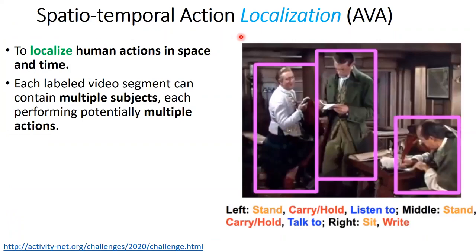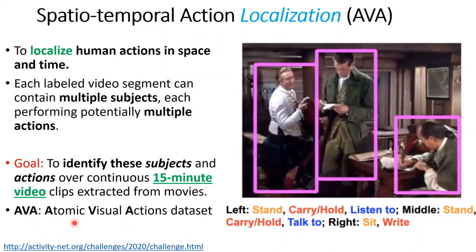AHAR — Atomic Visual Action dataset — is a spatiotemporal dataset where actions are localized in both space and time, with multiple subjects and potentially multiple actions. Each video is 15 minutes long, from real movie scenes, and you have to identify subjects and actions. There is also activity detection in extended videos for multi-camera systems, targeting forensic and real-time alerting applications.